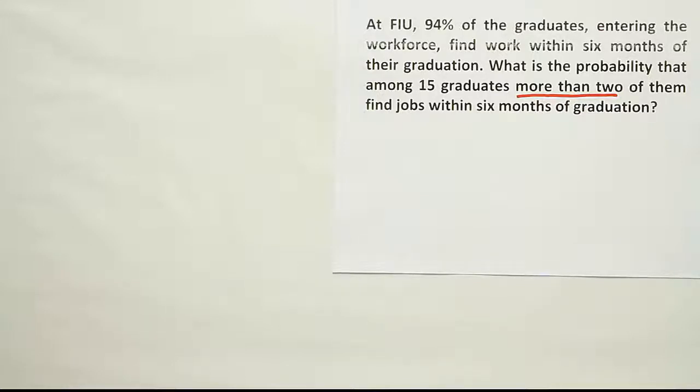The difference is that in this problem we have many probabilities involved, because more than two is the case of the probability that three of them find jobs, added to the probability that four of them find jobs, 5, 6, 7, 8, 9, 10, all the way up to 15. Because more than two could be any number from 3 to 15. Those are all separate probabilities. For example, the probability that exactly three of them find a job should be added to the probability that exactly four find a job, so on and so forth. That's a lot of calculations we'd have to do to solve this problem.